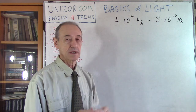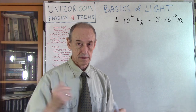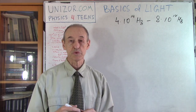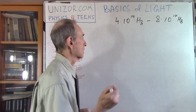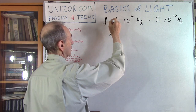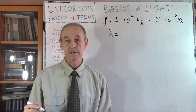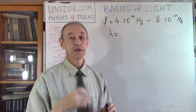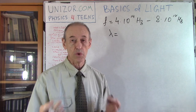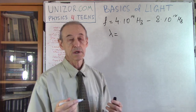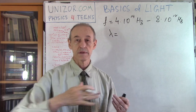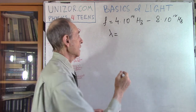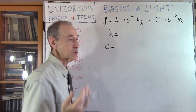Frequency is the number of periods per second - that's F. Lambda is wavelength - the length of one period in meters. To find the wavelength, we need to know the speed of light. Speed of light is the distance the front of the wave covers per second, in meters per second. This is called C, usually abbreviated as C. Approximately, it's 3 times 10 to the 8 meters per second.